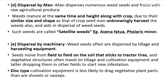Dispersal by man: man disperses numerous weed seeds and fruits with raw agricultural produce. Weeds that mature at the same time and resemble crop seeds in size, shape, and morphology are harvested unknowingly along with the crop. Such weeds are called satellite weeds. Examples include Avena fatua and Phalaris minor.